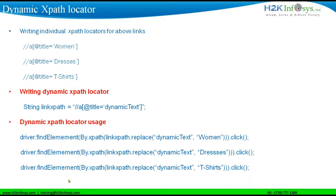So we have one XPath for multiple web elements — how do we use that? Very simple. At runtime, wherever you want to click on a particular web element, what we do is use driver.findElement(By.xpath(linkXPath)), where linkXPath is the variable name, and we replace 'dynamicText' with whatever text we really want to click. For example, if you want to click on the women link, replace with 'women', then click. Similarly for dresses, replace with 'dresses'; for T-shirts, replace with 'T-shirts'. So instead of writing three XPaths, we can simply do it with one single XPath.